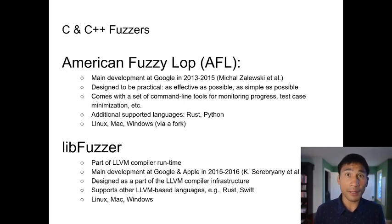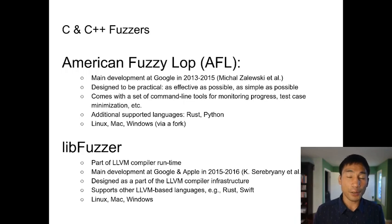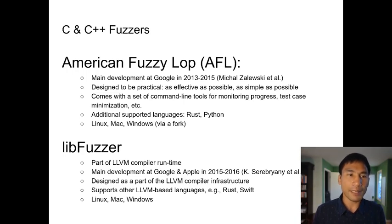Another example is LibFuzzer, which is part of the LLVM compiler runtime. LLVM is probably what you use when you compile things on computers these days. LibFuzzer was developed in a similar time period, 2015 to 2016, as part of the LLVM compiler infrastructure. Being tied to the compiler infrastructure gives you information about the program. It also supports other LLVM-based languages like Rust and Swift, and like AFL, it works on Linux, Mac, and Windows.